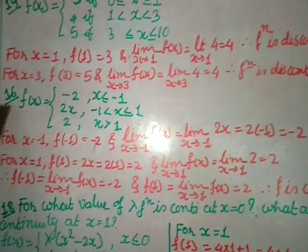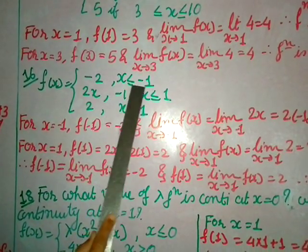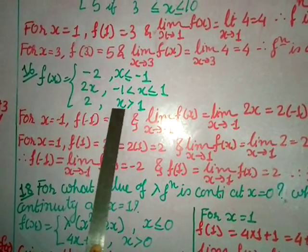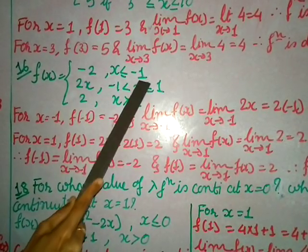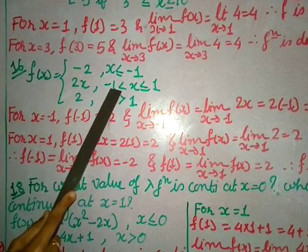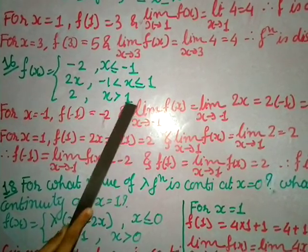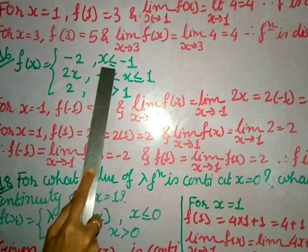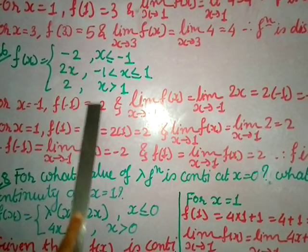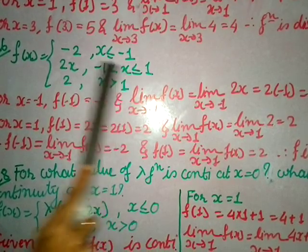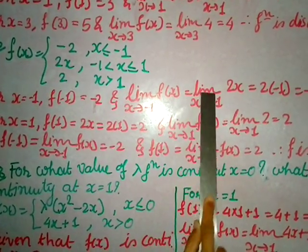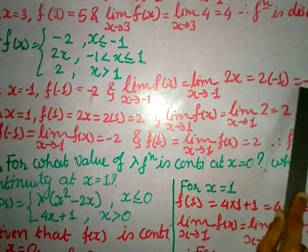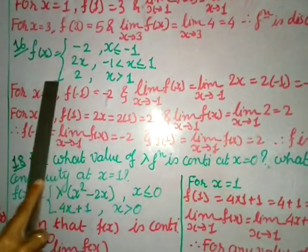Question 16: f(x) = −2 if x ≤ −1, 2x if −1 < x ≤ 1, and 2 if x > 1. Three conditions are given, so I check at x = −1 and x = 1. For x = −1: f(−1) = −2 (first function). lim(x→−1) f(x) = 2×(−1) = −2 (second function). Both are −2, so continuous at x = −1.